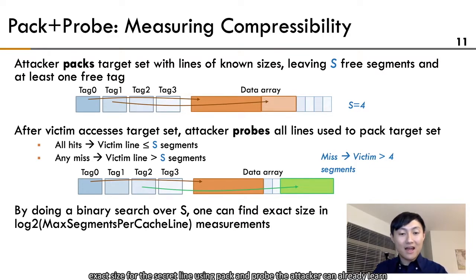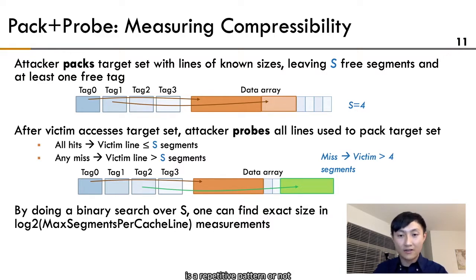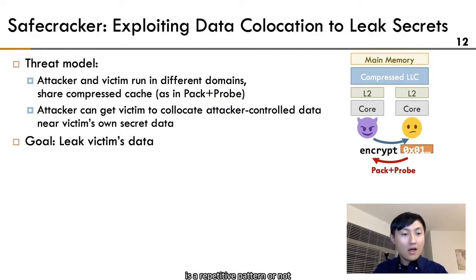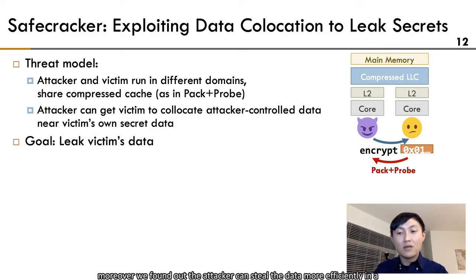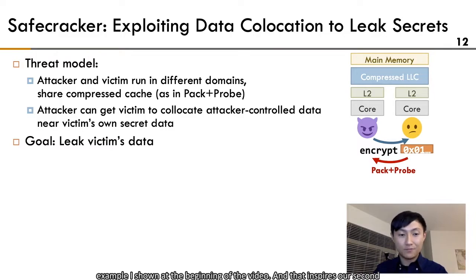Using Pack and Probe, the attacker can already learn something from the victim. For example, if the algorithm always compresses repeated patterns, Pack and Probe lets the attacker passively learn whether the secret data is a repetitive pattern or not. Moreover, we found that the attacker can steal data more efficiently and in a more damaging way. The key idea is to exploit attacker-controlled data collocated with the secret in the same cache line, similar to the earlier example — and that inspires our second attack, Safecracker.